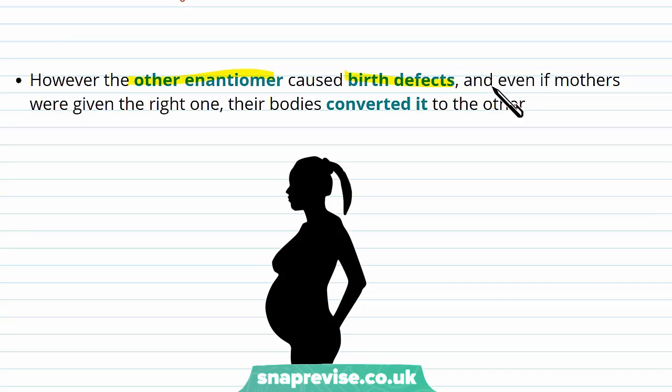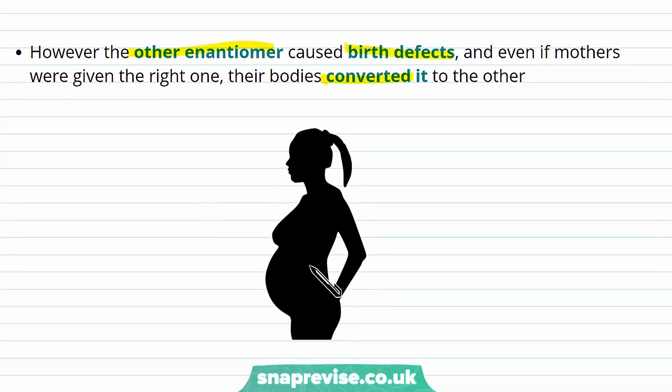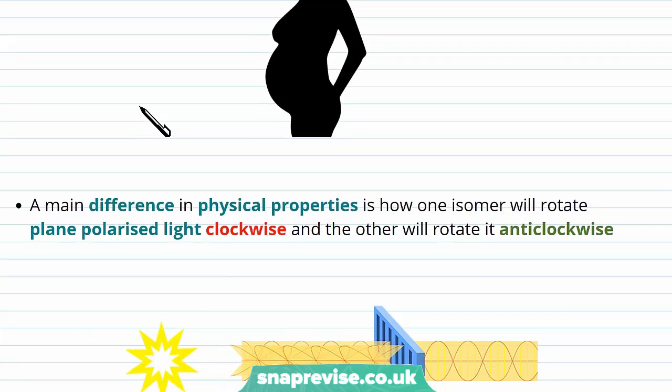With the other isomer, birth defects were caused, and even if mothers were given the safe isomer, the bodies converted it back into a mix of the two. So there was no escaping the fact, and lots of women were given this drug, which caused birth defects.